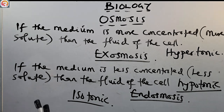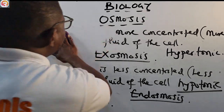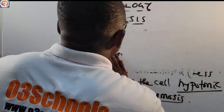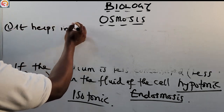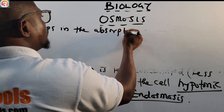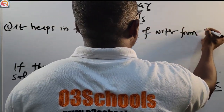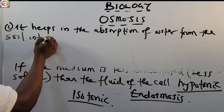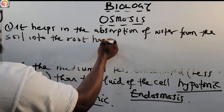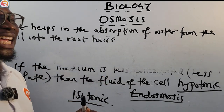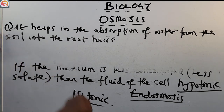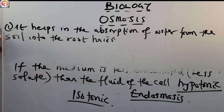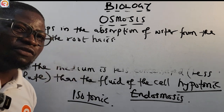Now let's quickly look at the usefulness of osmosis. Number one: it helps in the absorption of water from the soil into the root hairs. The process whereby the roots of a plant absorb water from the soil occurs by osmosis, so it is very useful in that regard.